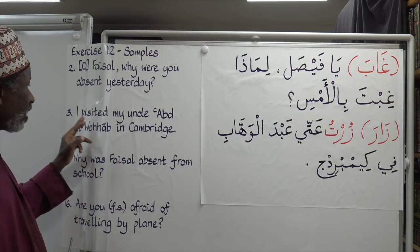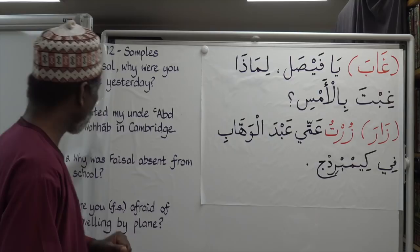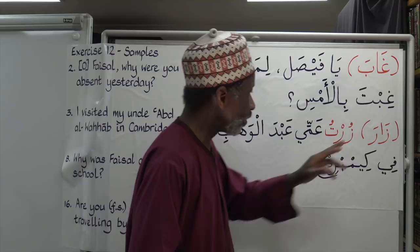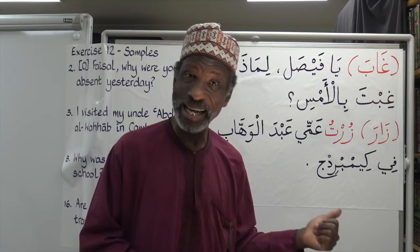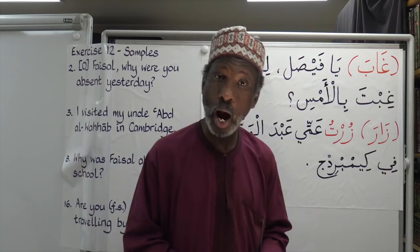The answer for number three: 'I visited my uncle Abd al-Wahab in Cambridge.' Now we're going to use the verb to visit — Zara — and it is a hollow verb. Zara: you see it's carrying alif, and that alif is representing waw. Zara, Yazuru.